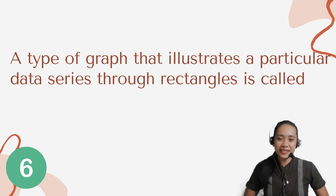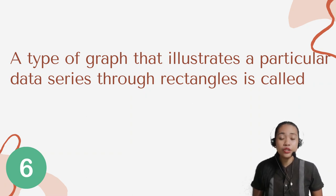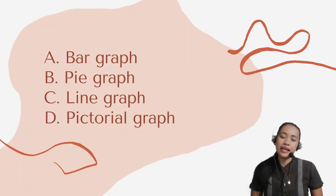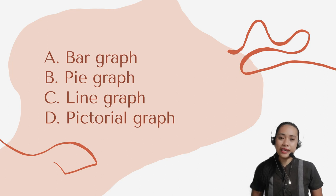Question number 6. A type of graph that illustrates a particular data series through a rectangle is called what? Letter A: Bar graph. B: Pie graph. C: Line graph. Or letter D: Pictorial graph.